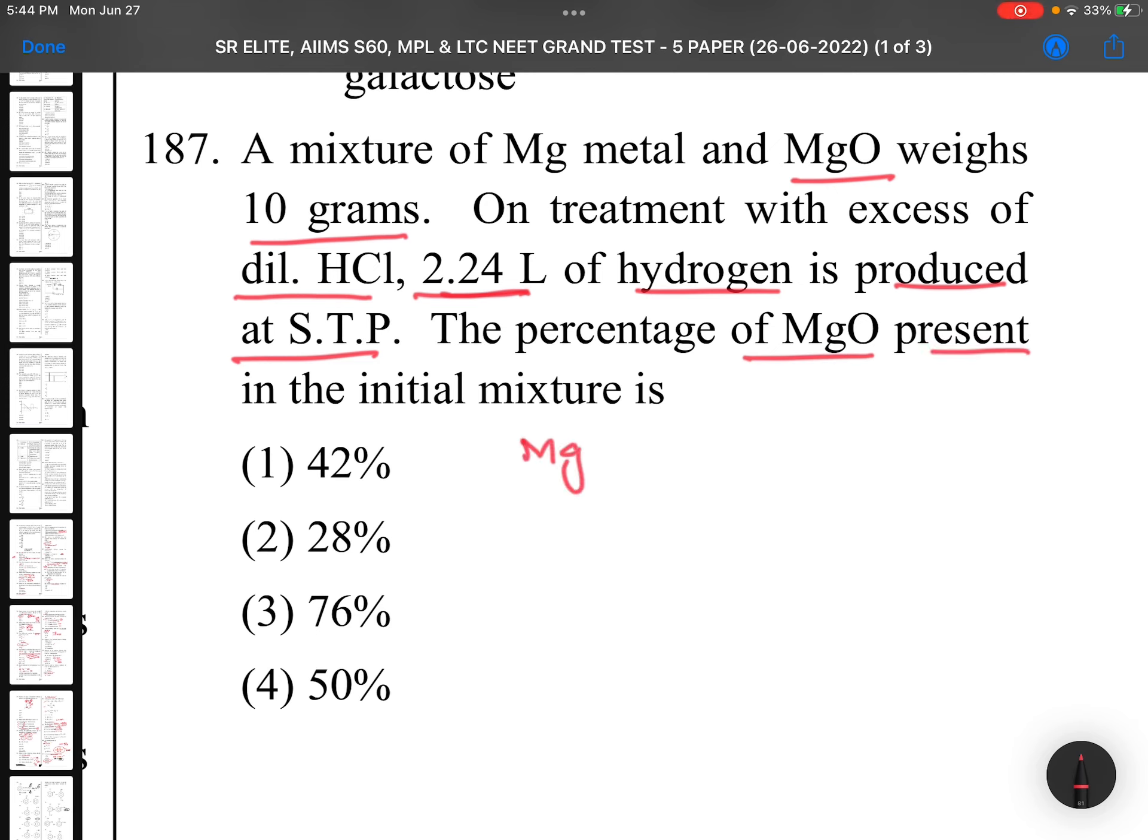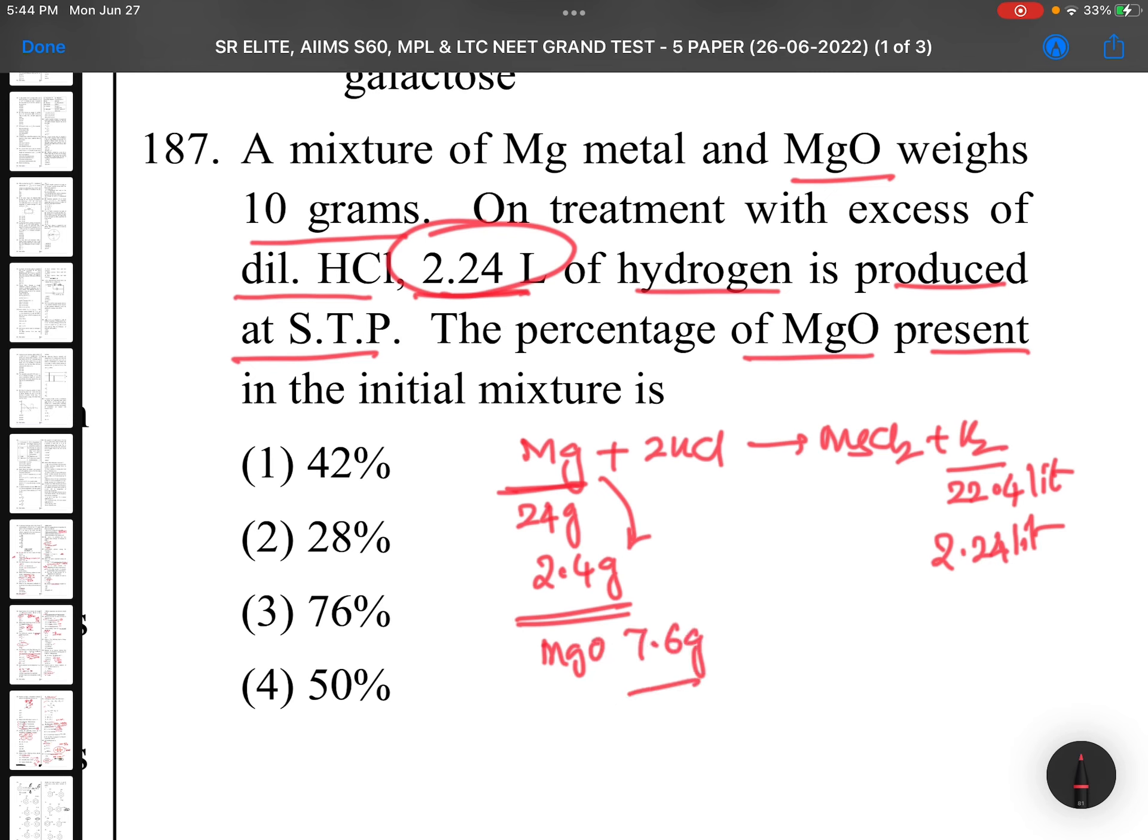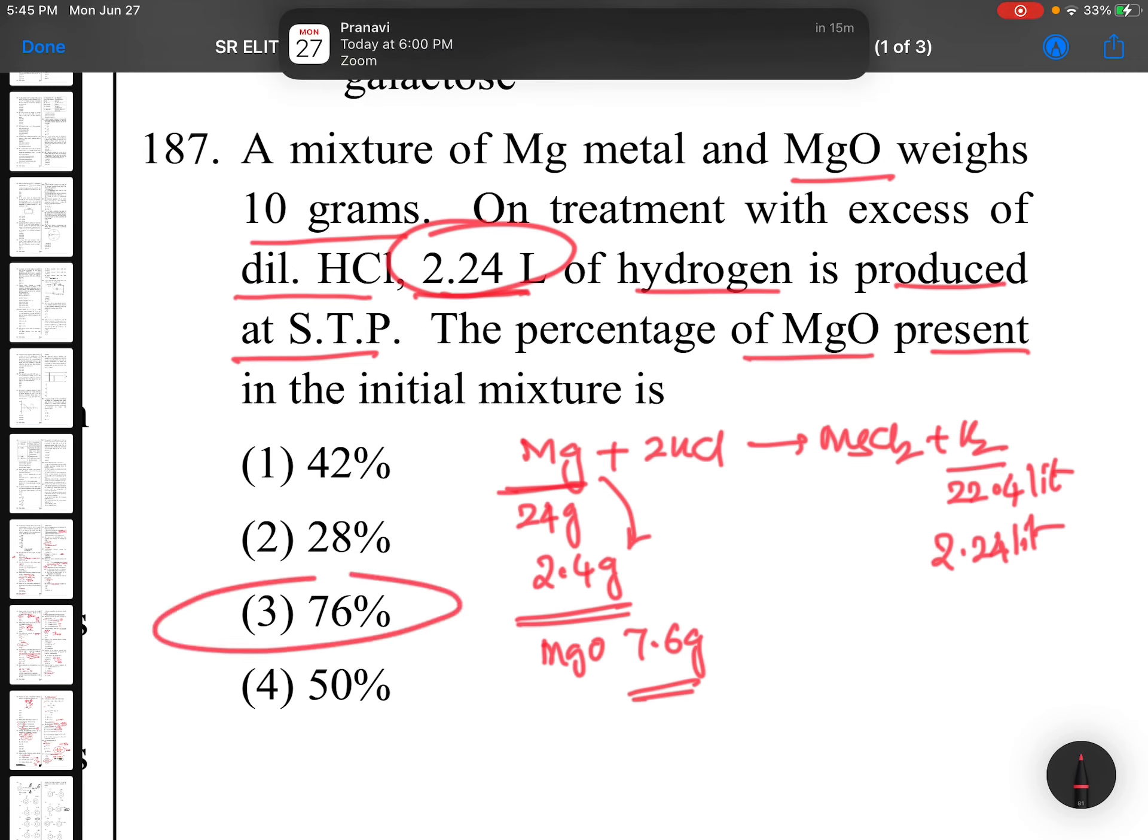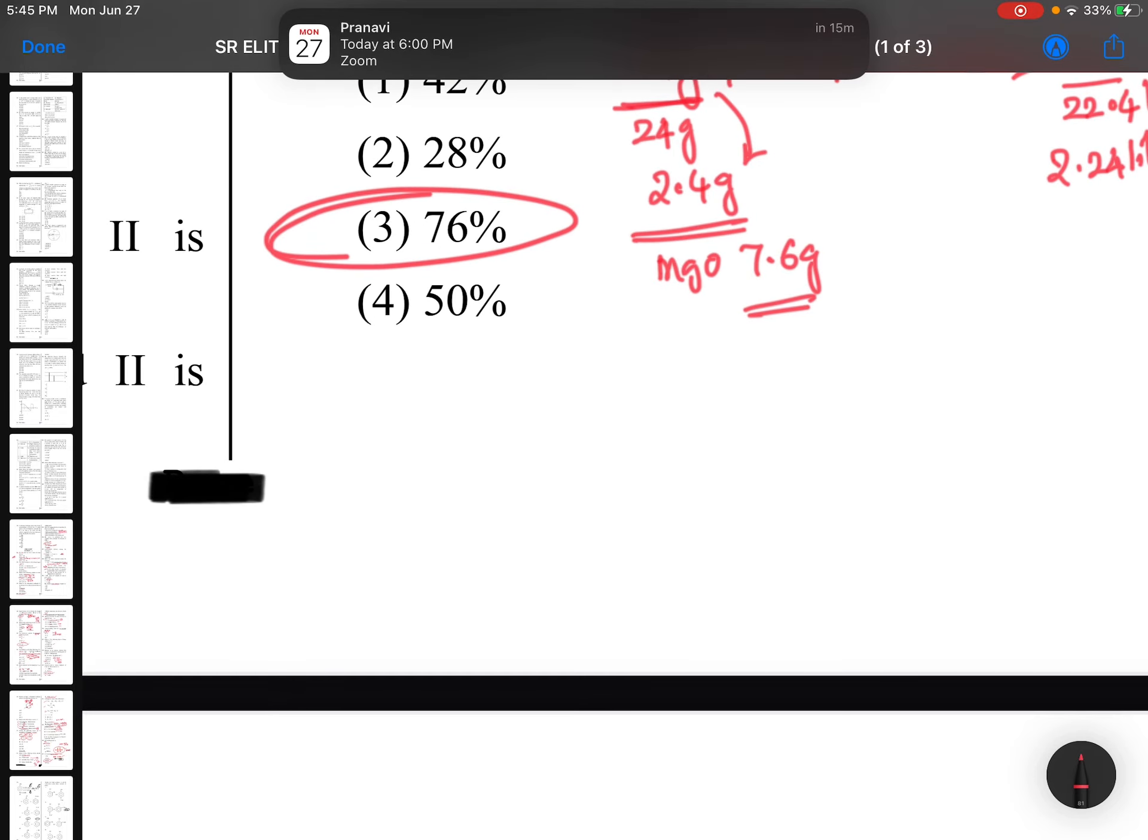Question 187: A mixture of magnesium metal and magnesium oxide weighs 10 grams. On treatment with excess dilute HCl, 2.24 liters of hydrogen is produced at STP. Very simple: Mg plus HCl gives MgCl2 plus H2. If you take 24 grams of magnesium, you get 22.4 liters. But you got 2.24 liters means it is 2.4 grams magnesium, so magnesium oxide is 7.6 grams. Out of 10, 7.6 in 100 will be 76%.